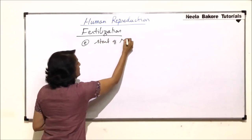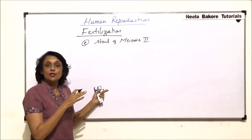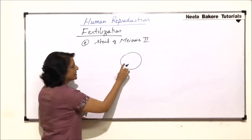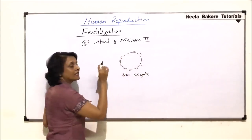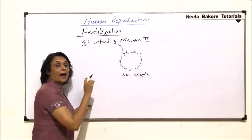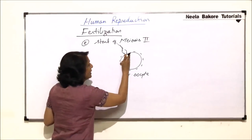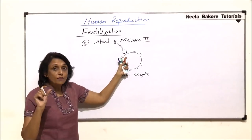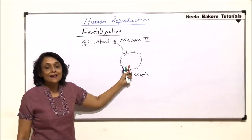Meiosis II is going to start because oogenesis was arrested in meiosis I. The cell present is the secondary oocyte and it has all the layers around it. The sperm has come in contact with the membrane by dissolving all the layers around it. This contact also helps in dissolving the membrane, so a reception cone is formed and the membrane dissolves so that the nucleus of the sperm can enter into the egg.